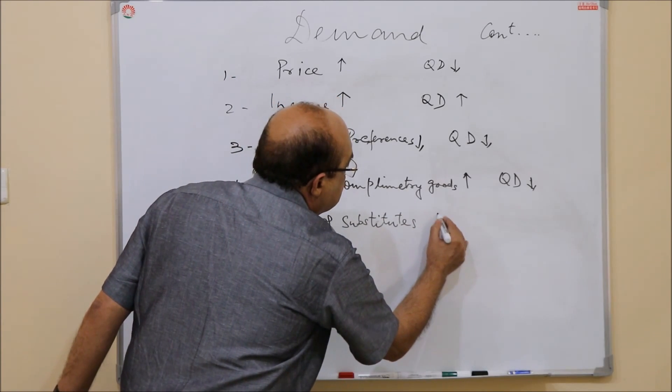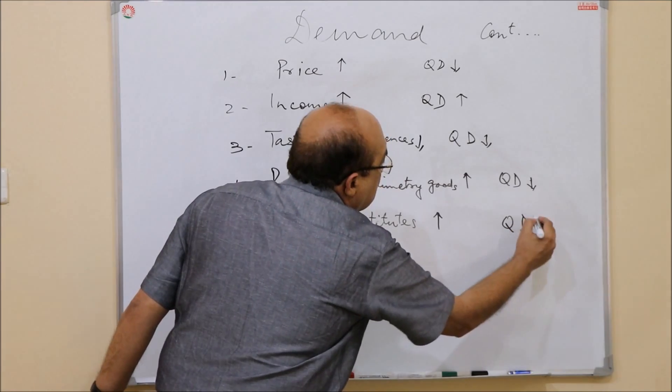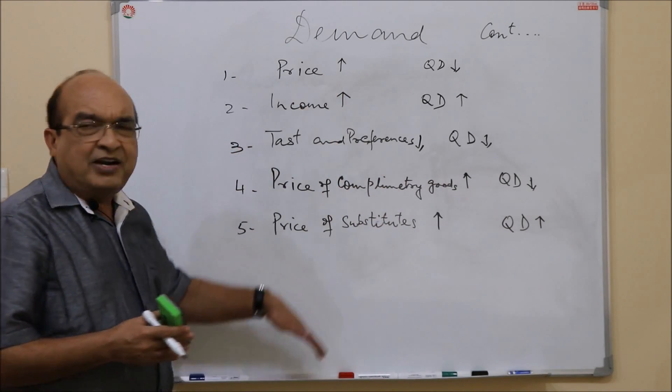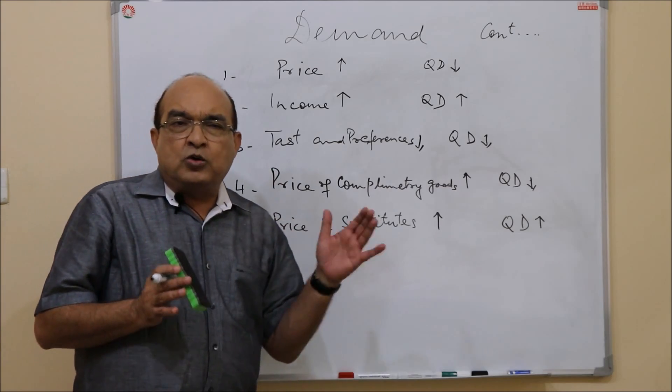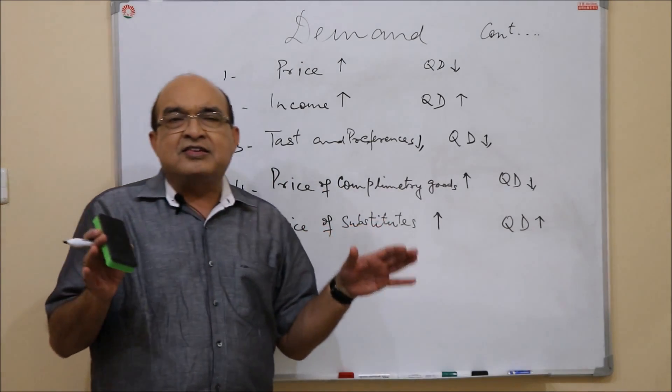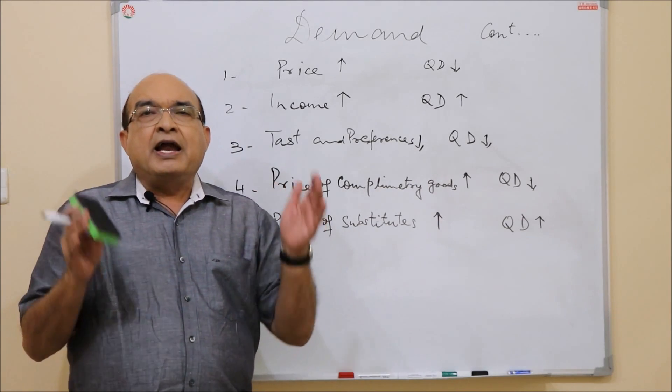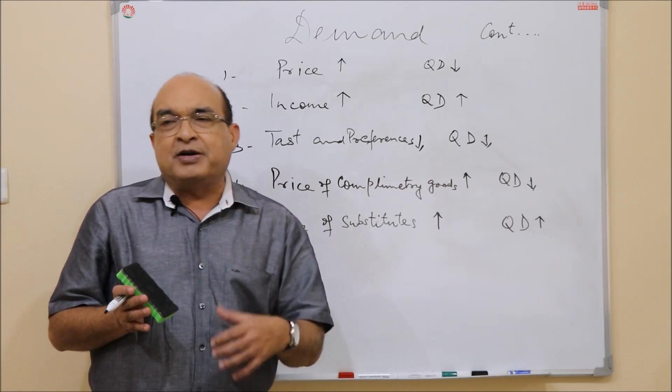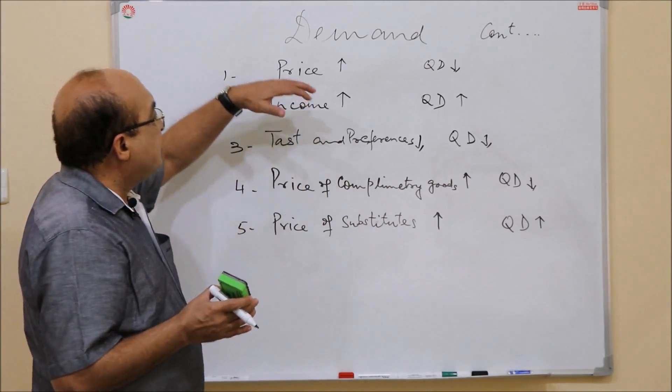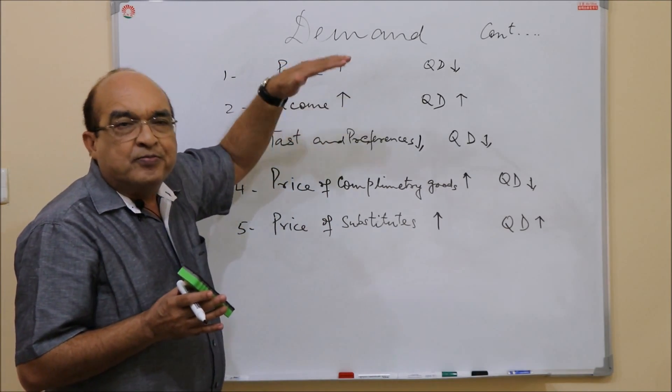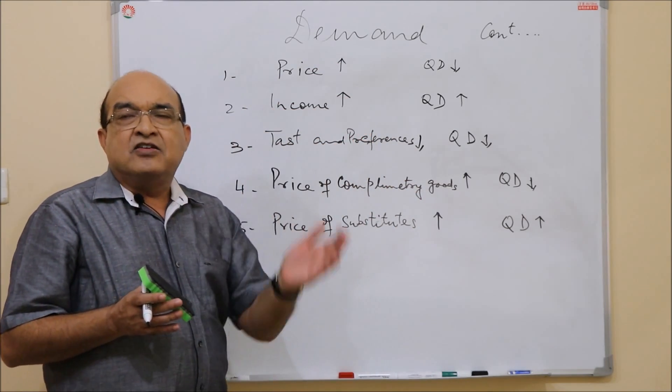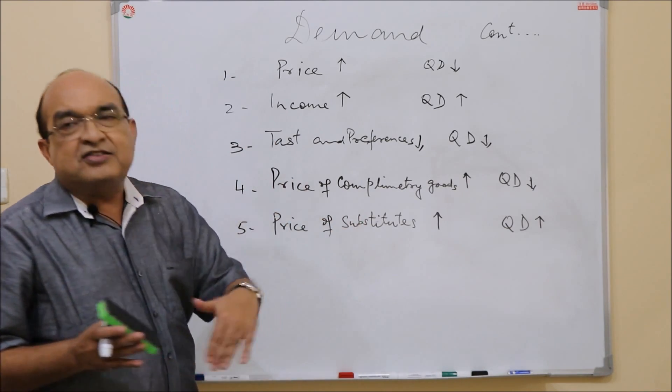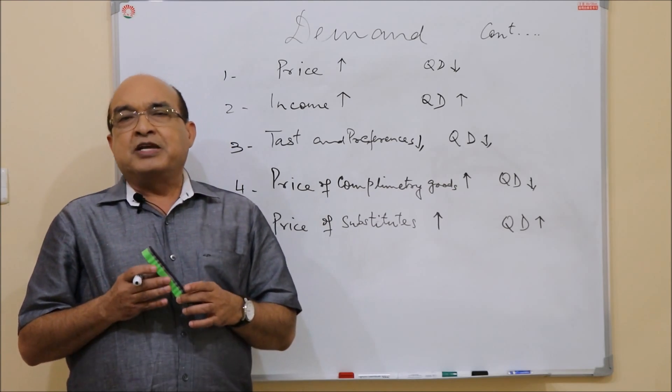So these are a few factors. There could be many more. I have outlined a few. So it is important to understand that there are many factors on which the quantity demanded depends. And it is for this reason that when we observe or when we measure the changes in quantity demanded, we measure it with respect to one of such variables or factors, holding other factors to remain constant, or assuming other factors to remain constant. Those things I will discuss in my next video. Thank you very much.